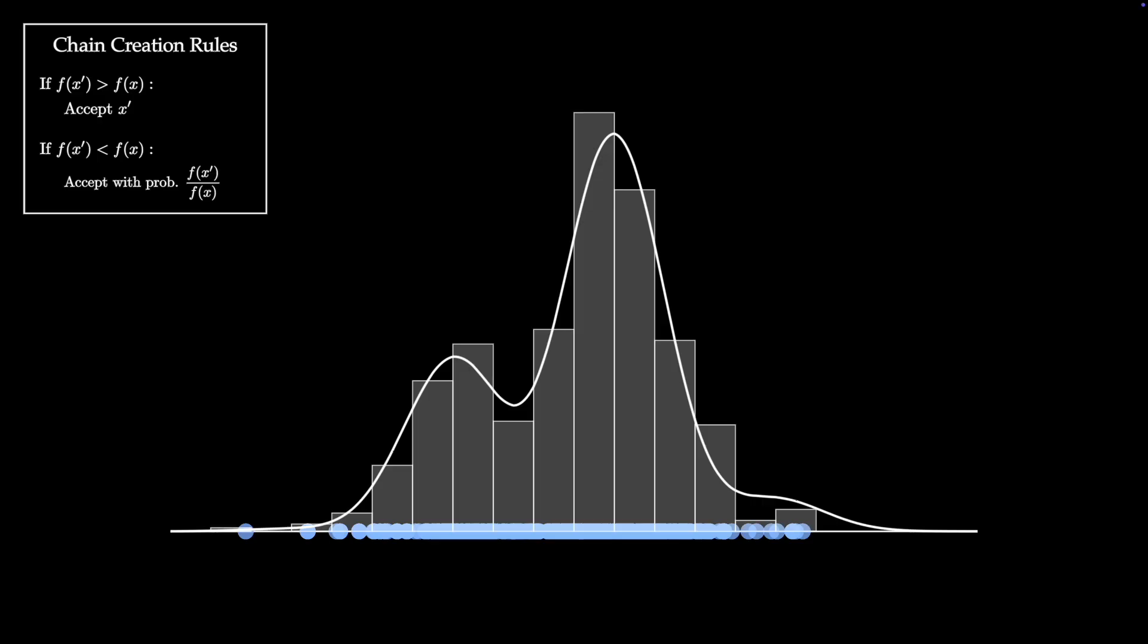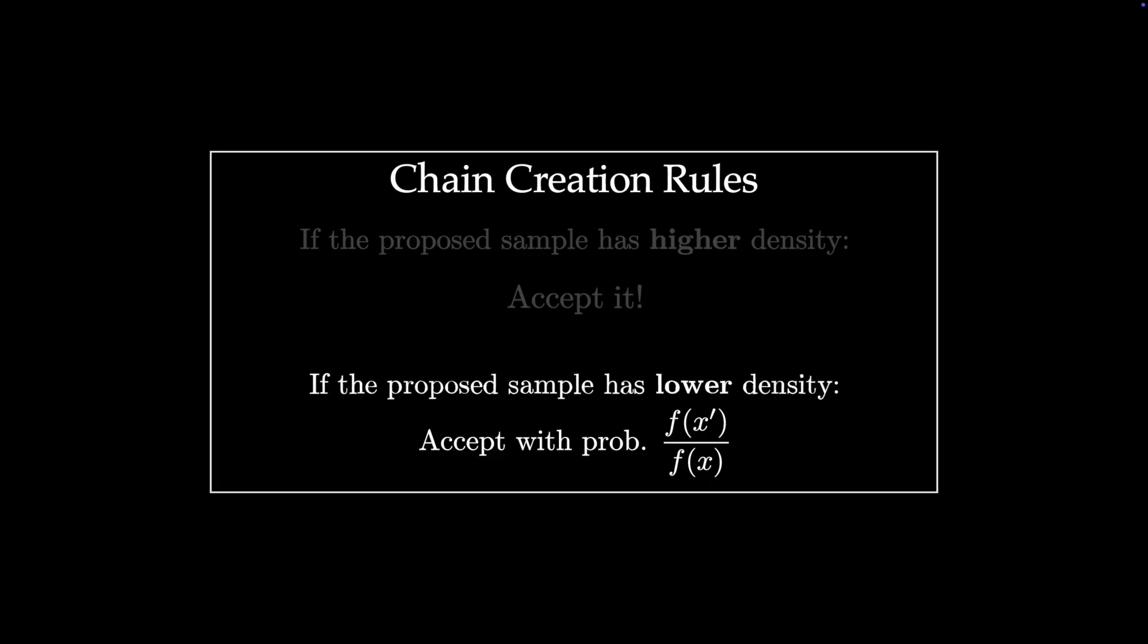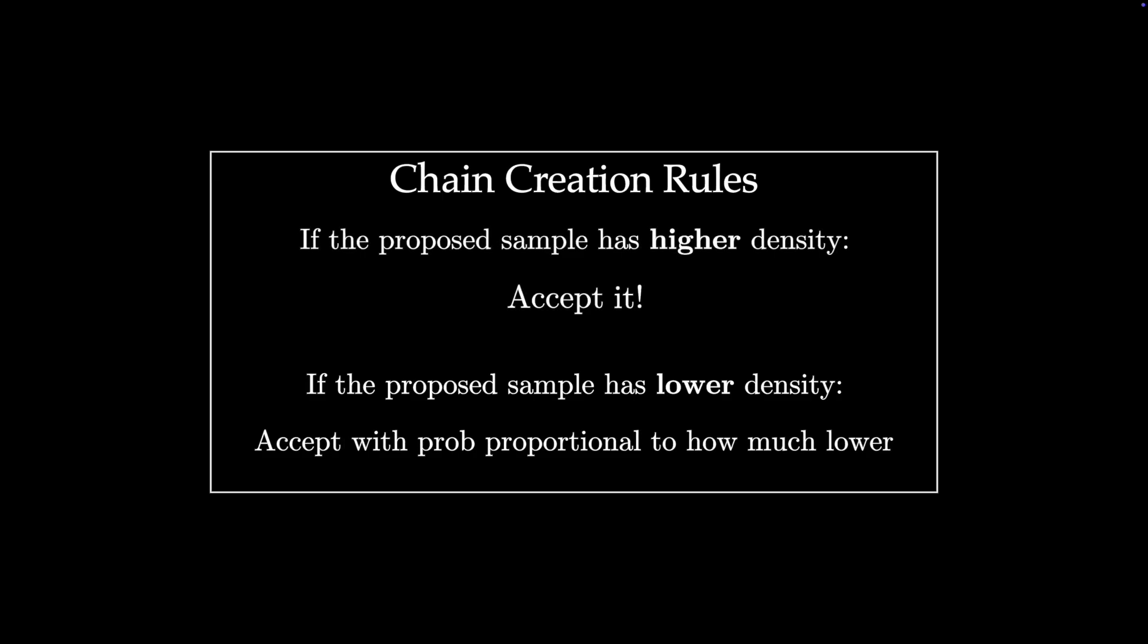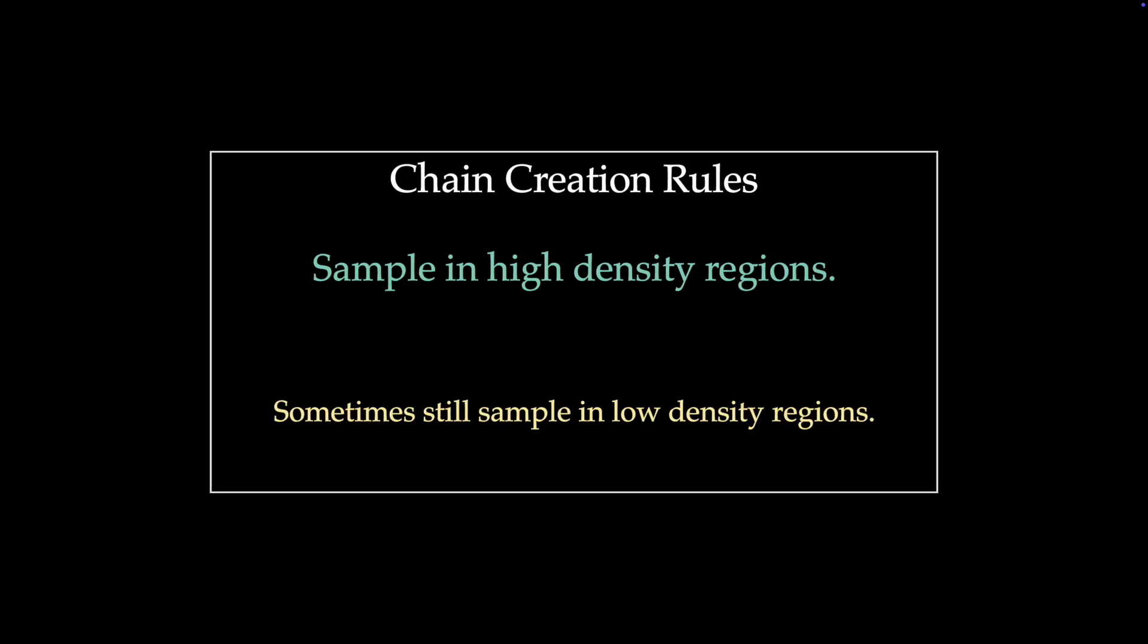But let's take a bit more of the mystery out of it and get some more intuition for what's really going on by examining the chain creation rules more closely. Looking at the first rule, it essentially says that if the proposed sample has higher density than the current sample, we should always accept it. If the proposed sample has a lower density, we should accept it with frequency proportional to how much lower. So in other words, the first rule encourages us to sample in high density regions, and the second rule makes sure that we still sometimes sample in low density regions. This exactly matches the intuition that we got from our demo.